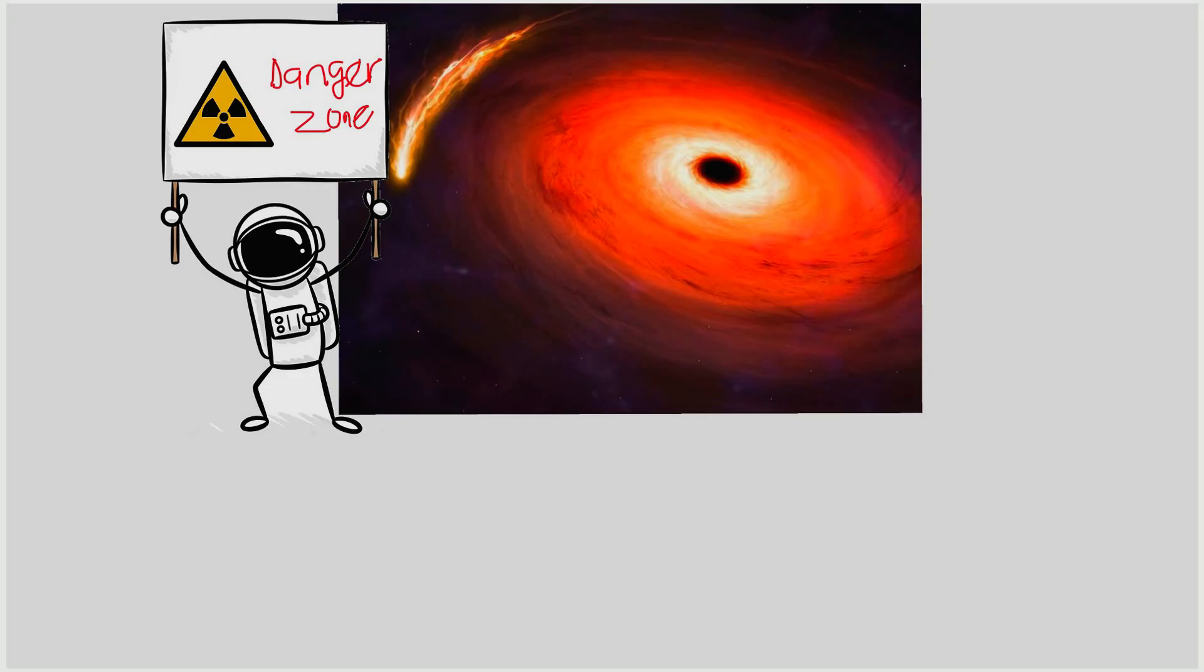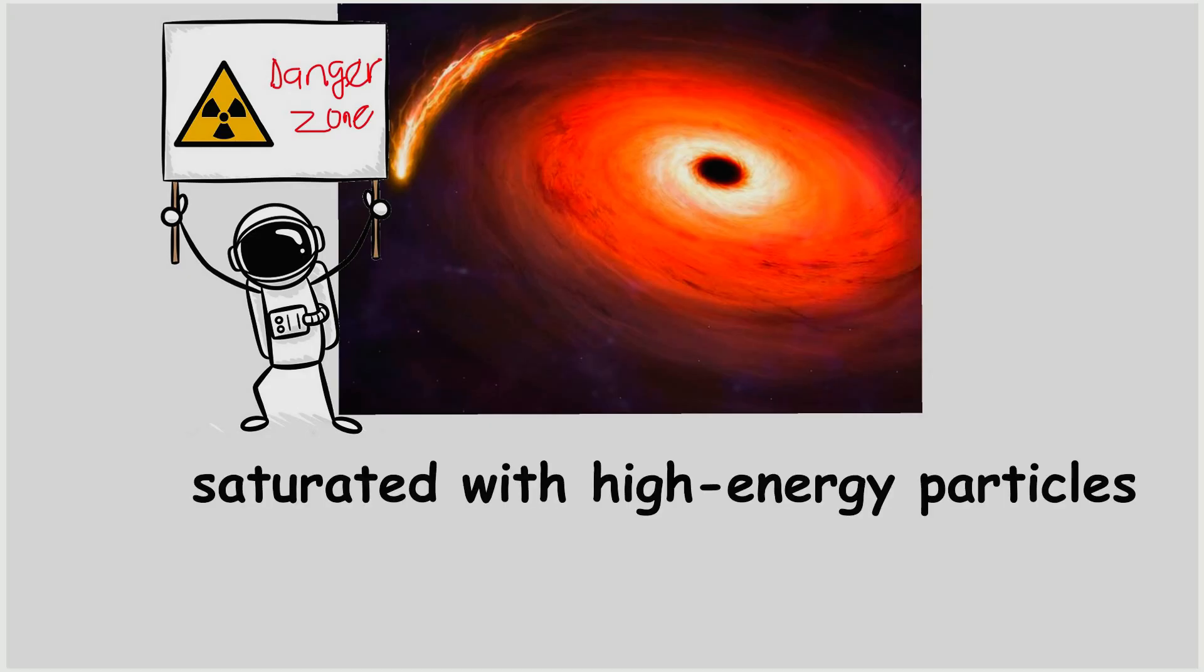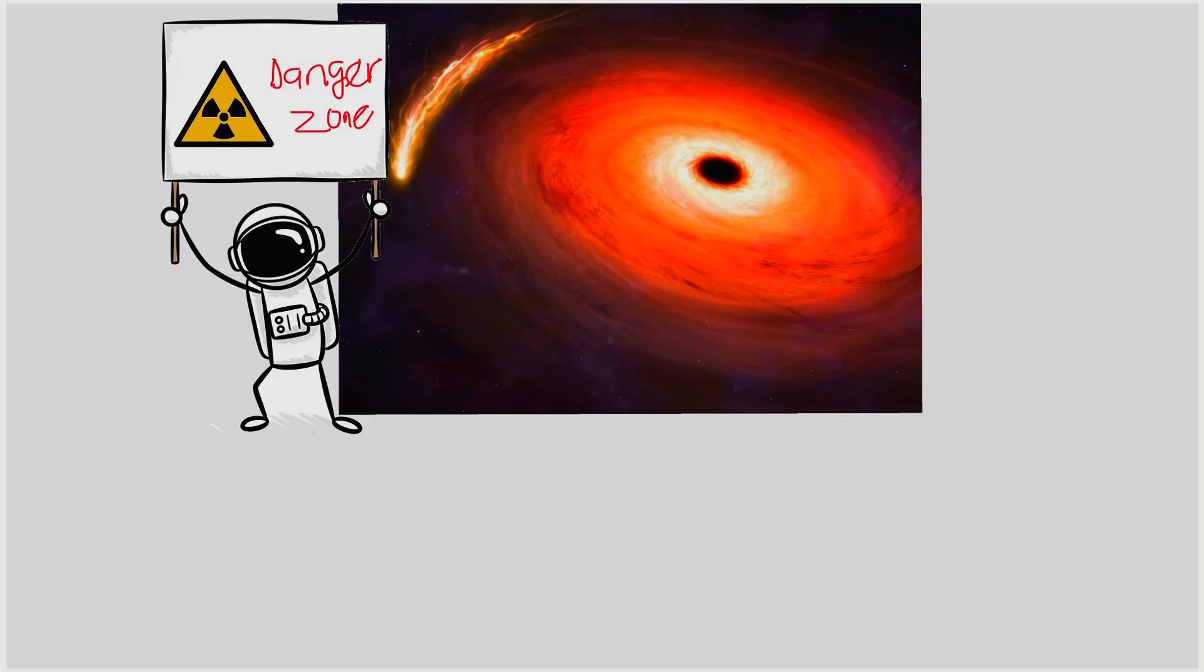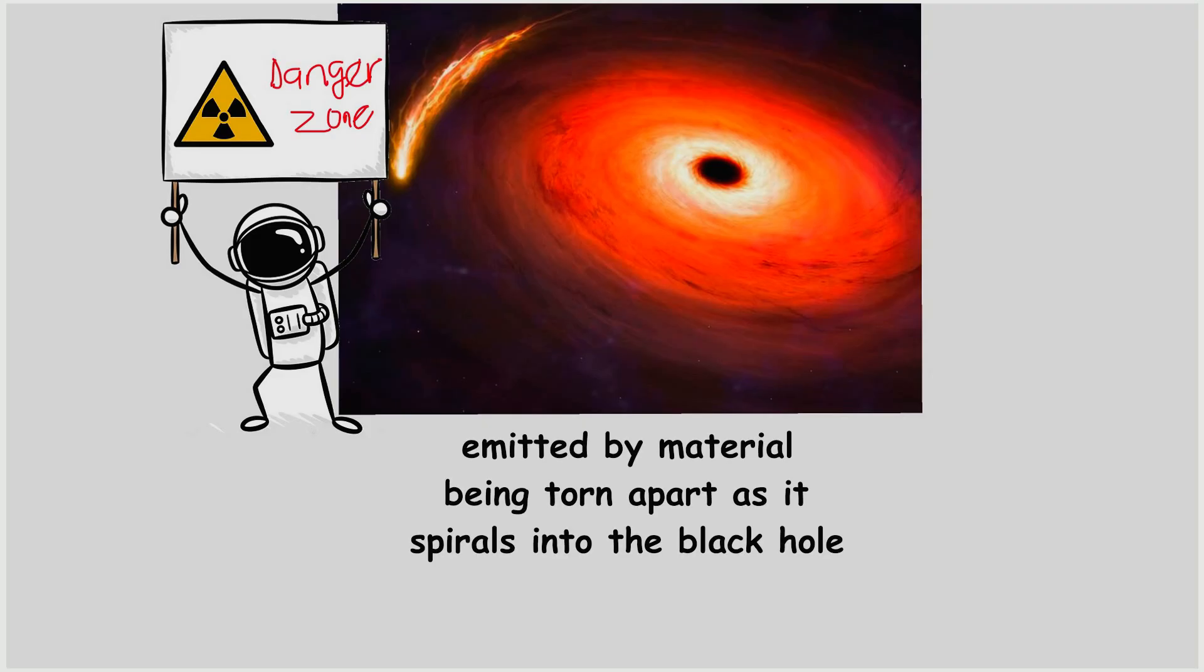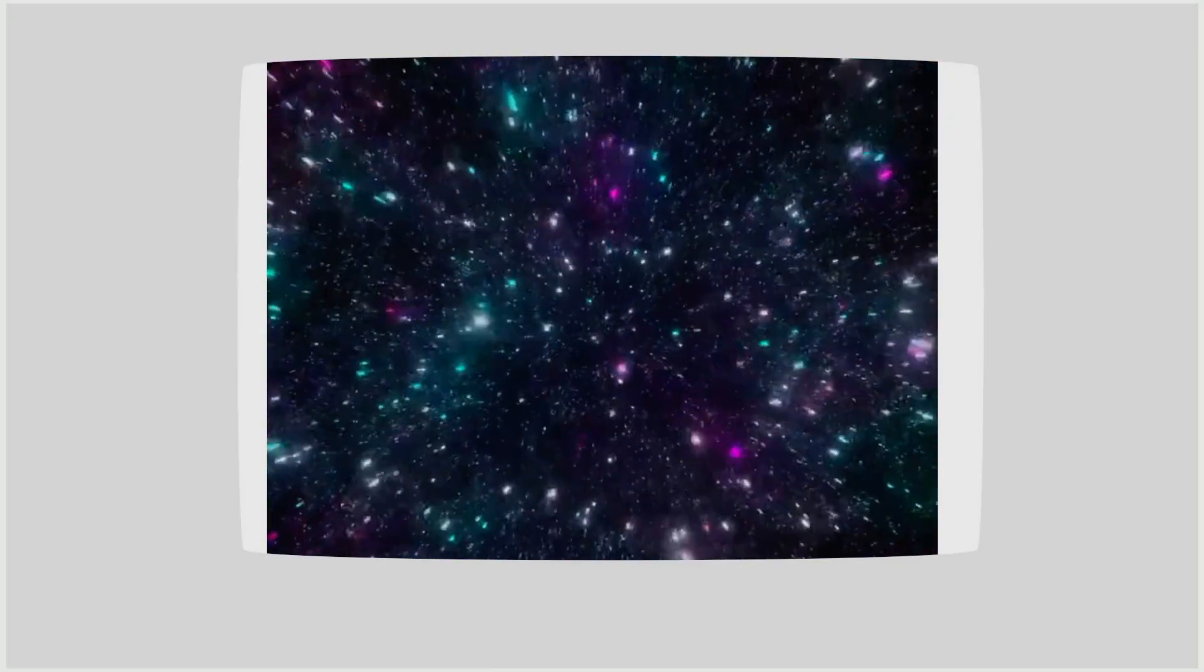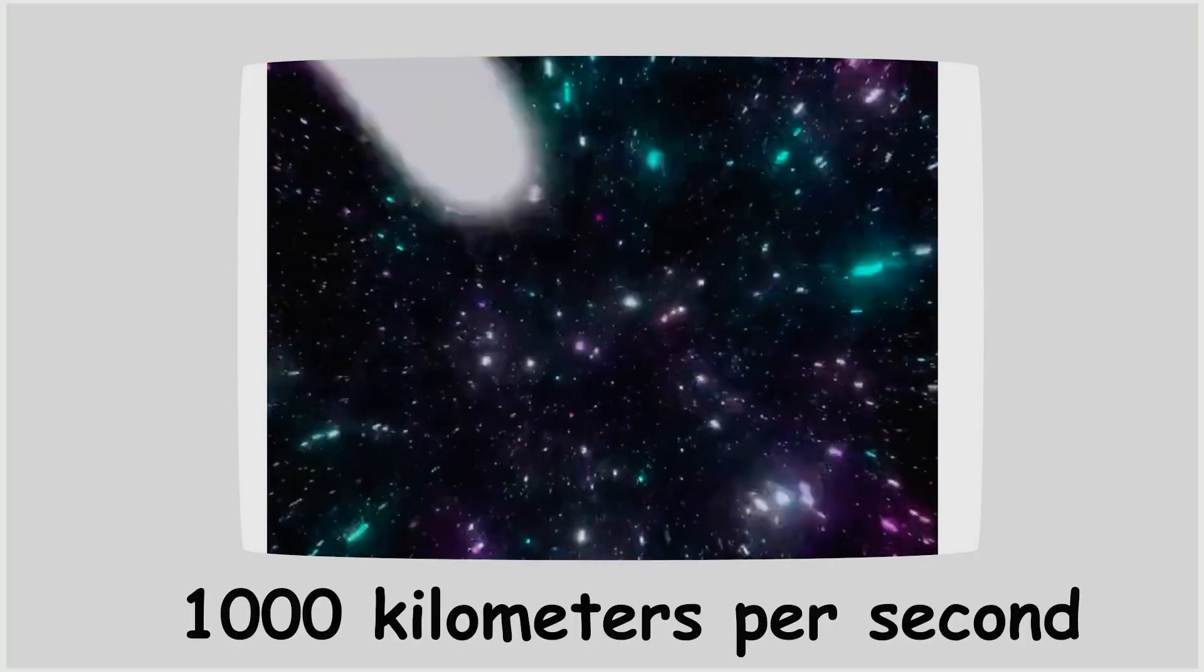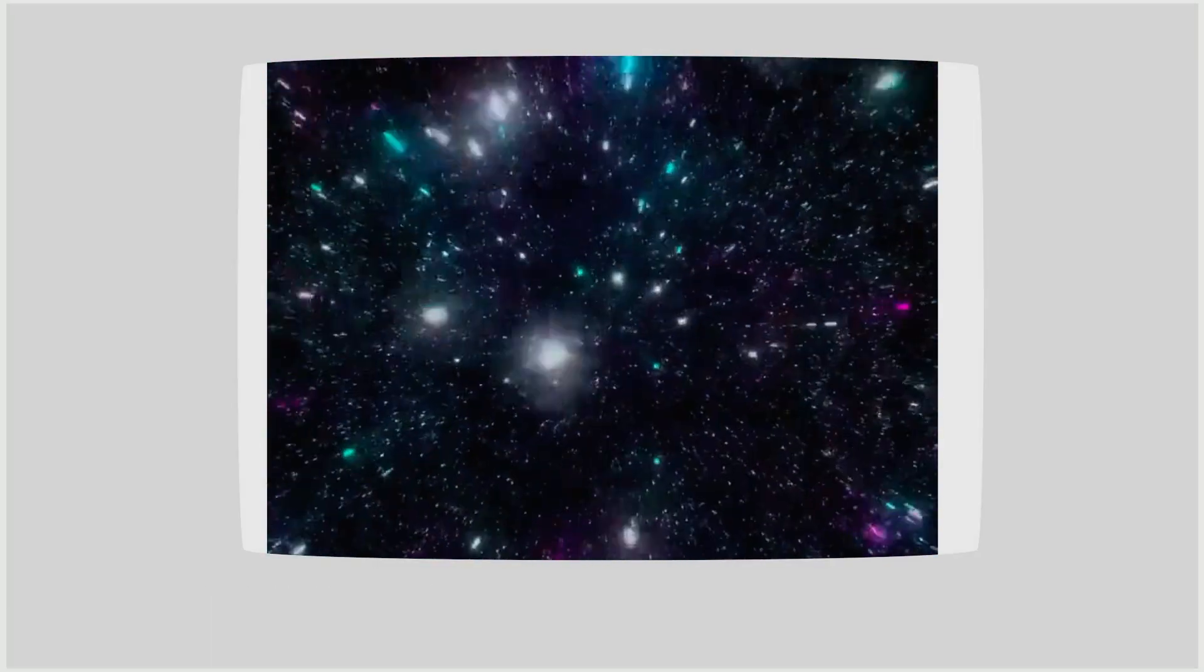The space near Sagittarius A* is saturated with high-energy particles, X-rays, and gamma rays, emitted by material being torn apart as it spirals into the black hole. Stars in the vicinity travel at speeds of up to thousands of kilometers per second, pulled by the black hole's gravity.